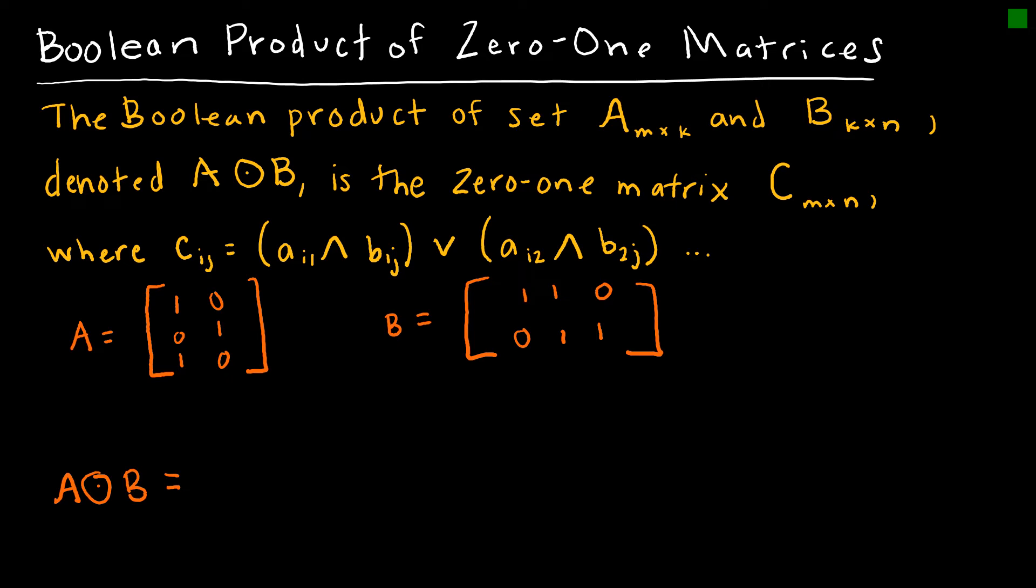The last operation I'd like to talk to you about with zero-one matrices is Boolean products. And a Boolean product is essentially just like when we multiplied regular old matrices. Except, of course, we're looking at both A and B being zero-one matrices.